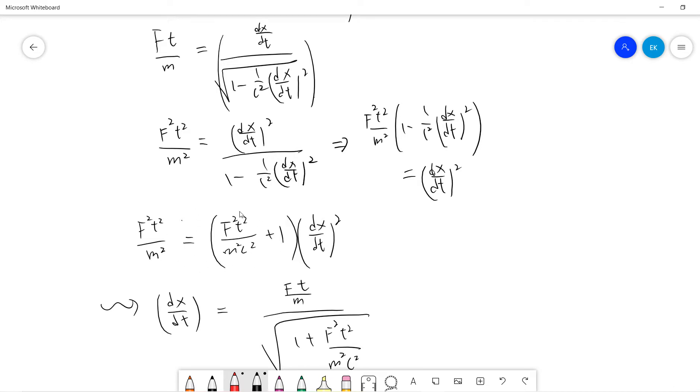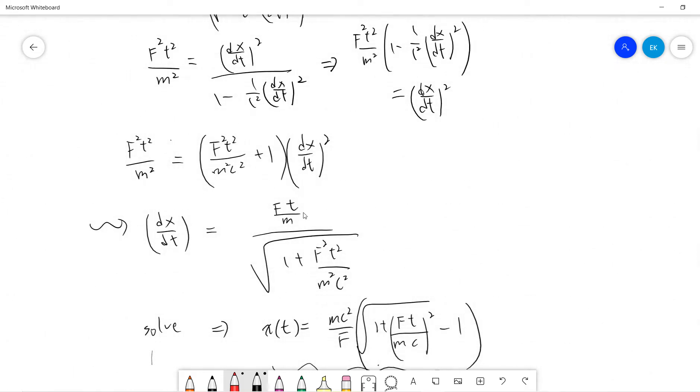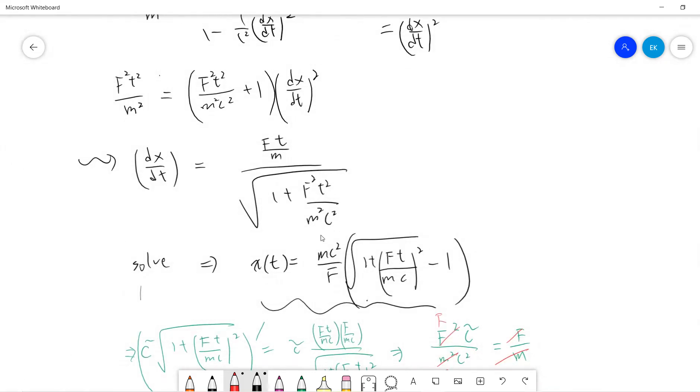So obviously, if c is infinity, there is no this term, then you get your original Newtonian mechanics if c is infinity. So somehow you get this term. You can still see when c goes to infinity, then your answer is ft/m, which is just acceleration times t.